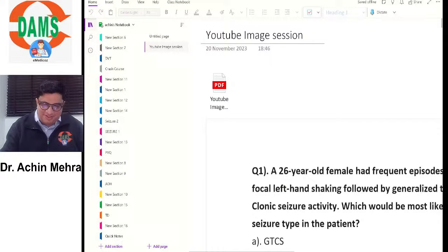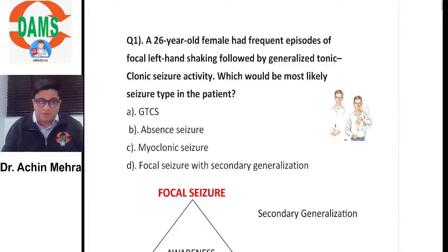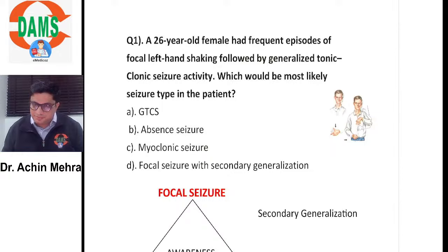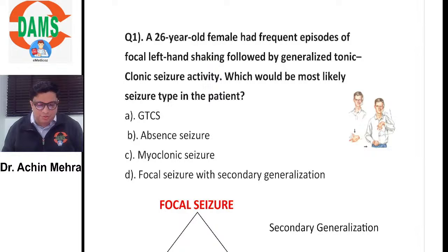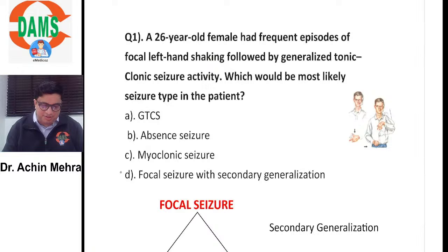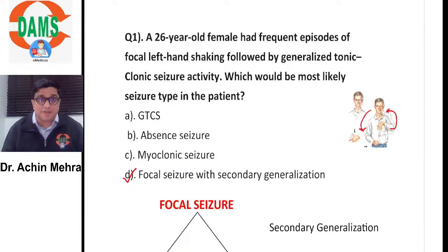I'll be discussing some MCQs which are image-based and a quick recall of every topic covered in neurology, especially the CNS part. Let's start: a 26-year-old female has frequent episodes of focal left-hand shaking followed by generalized tonic-clonic seizure activity. The likely type of seizure is focal seizure with secondary generalization, because it started in the left upper limb, went to the left side of the face, and then progressed everywhere across the body.